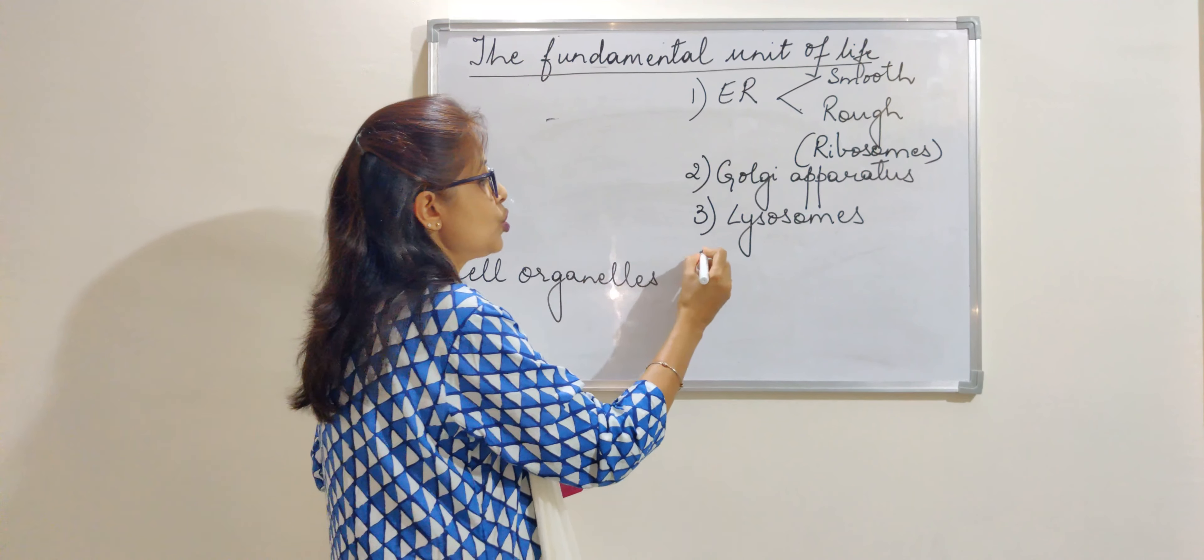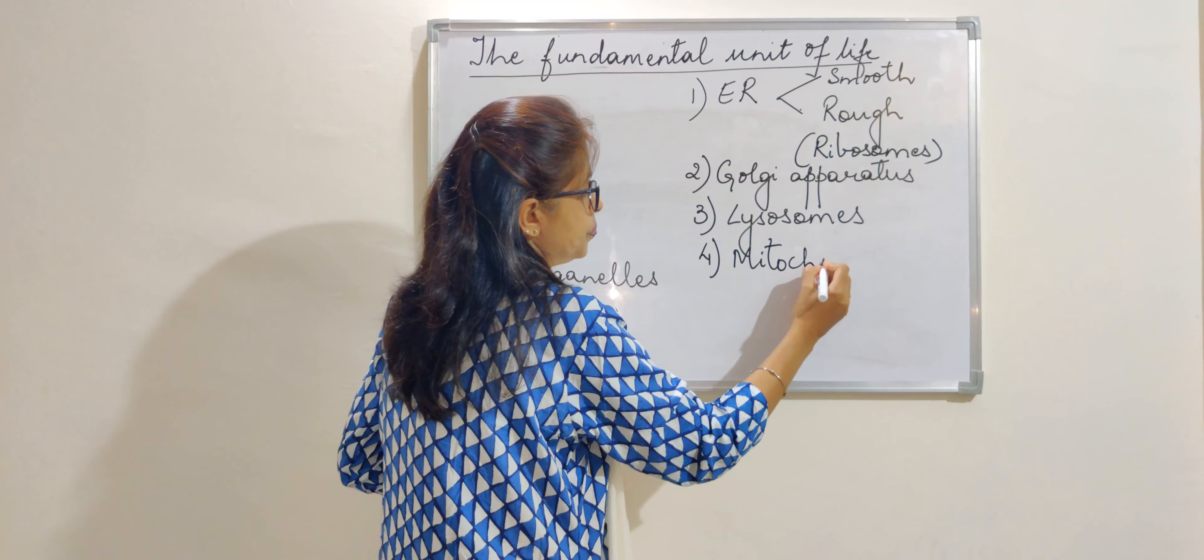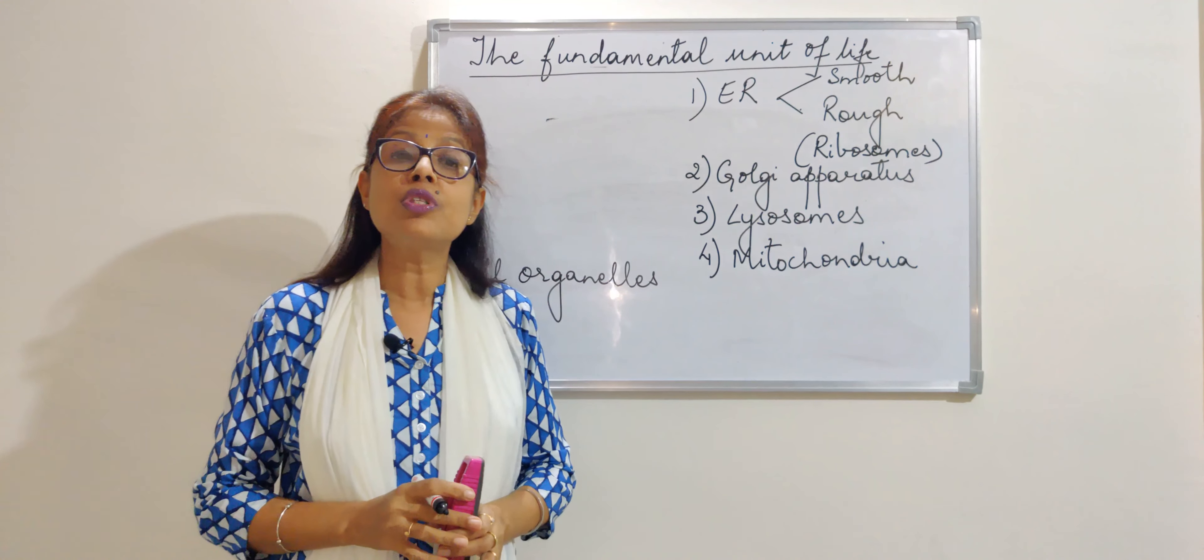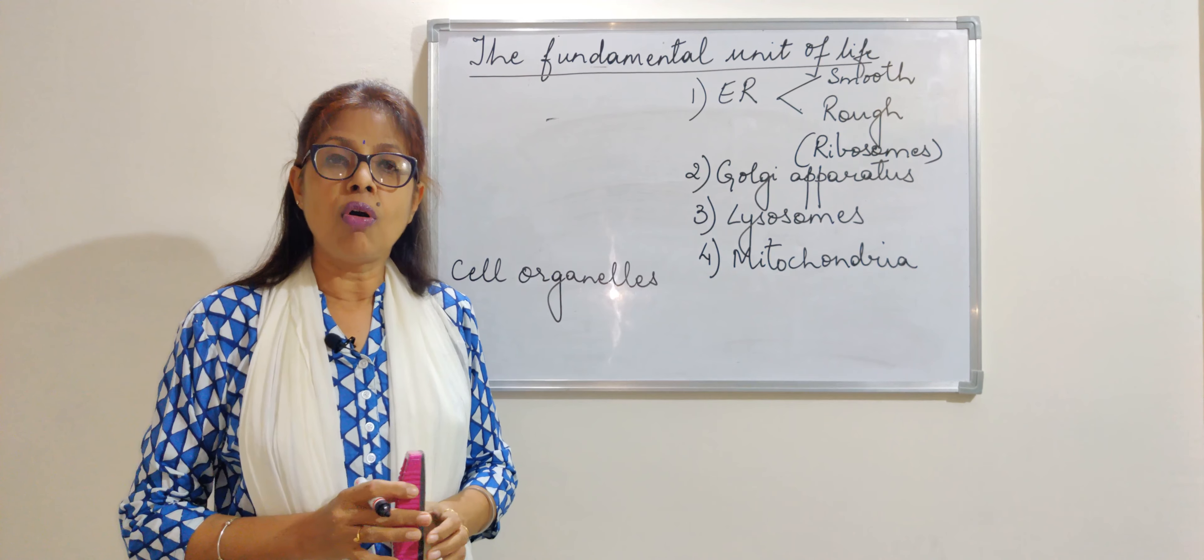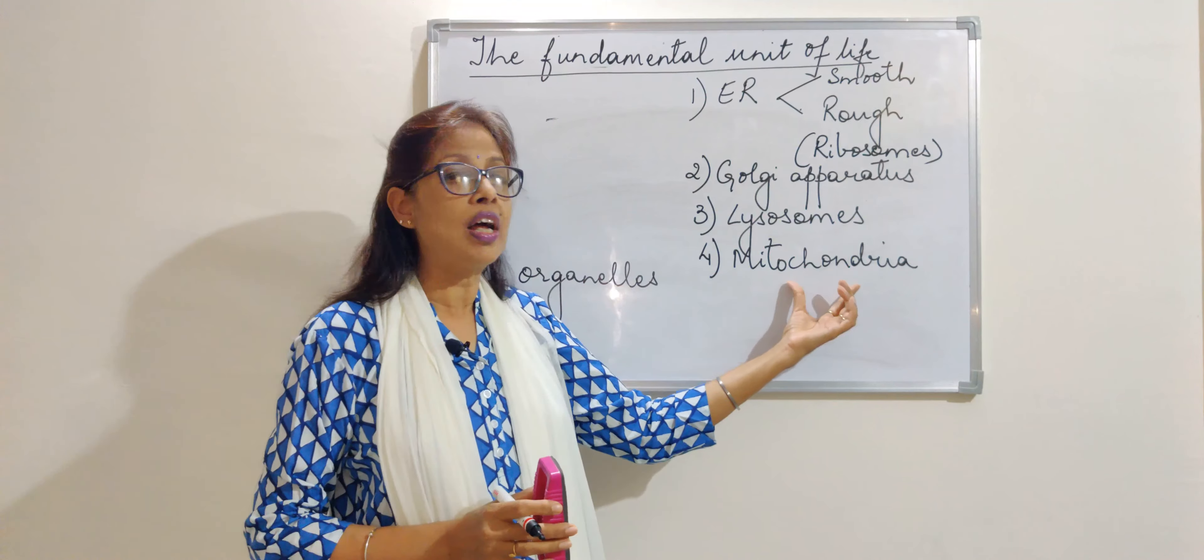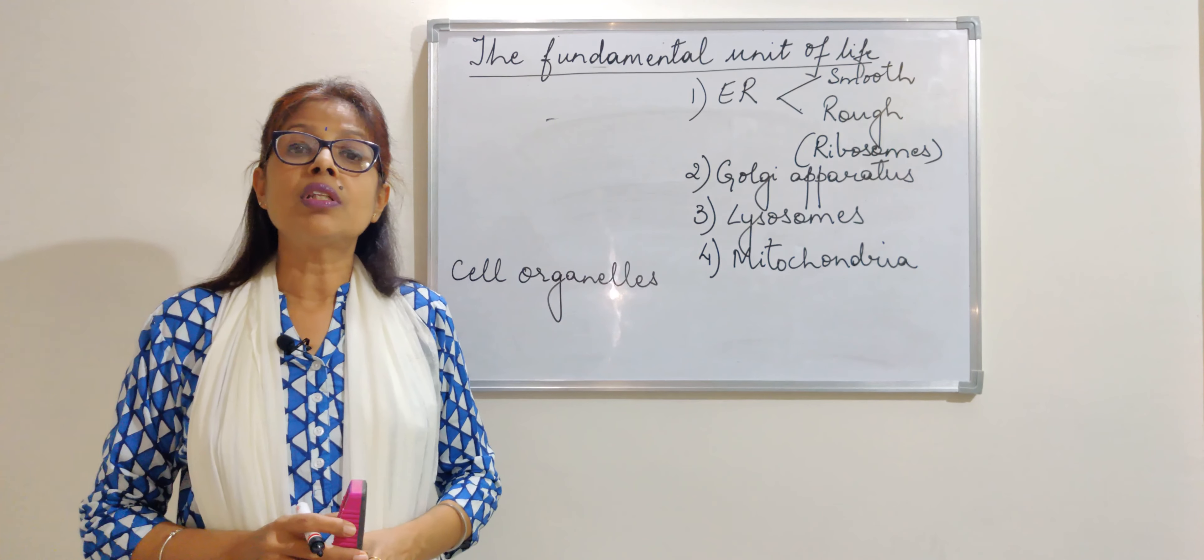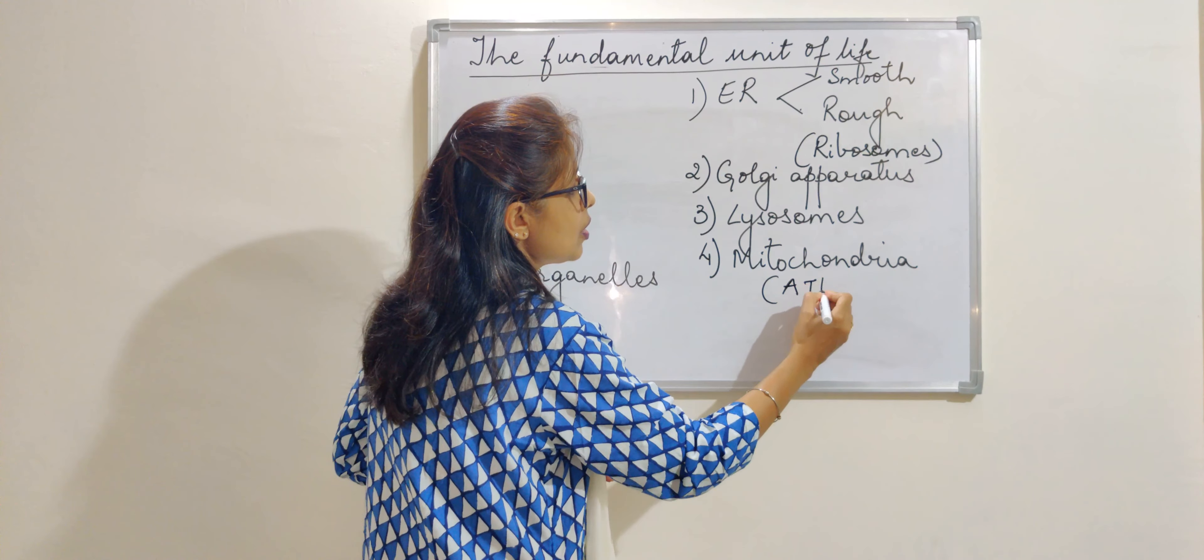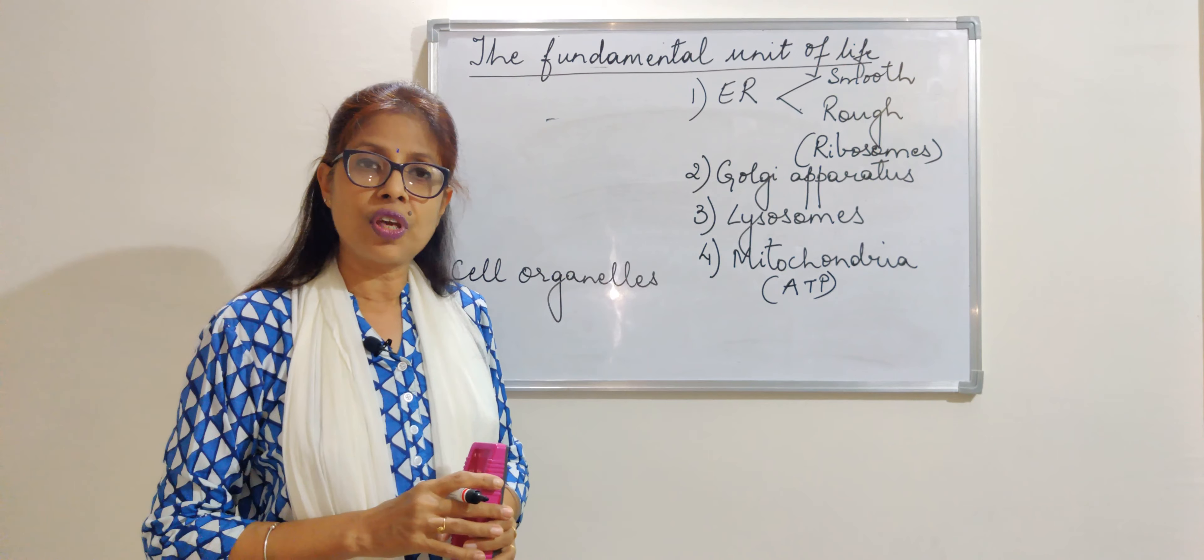Then we come to the next one, that is mitochondria. Whatever amount of energy is produced by the breakdown of food and oxygen, or you can say oxidation of food, that energy is stored in one of the cell organelles called the mitochondria. This mitochondria is called the powerhouse of cell and it stores the energy in the form of ATP, that is adenosine triphosphate.